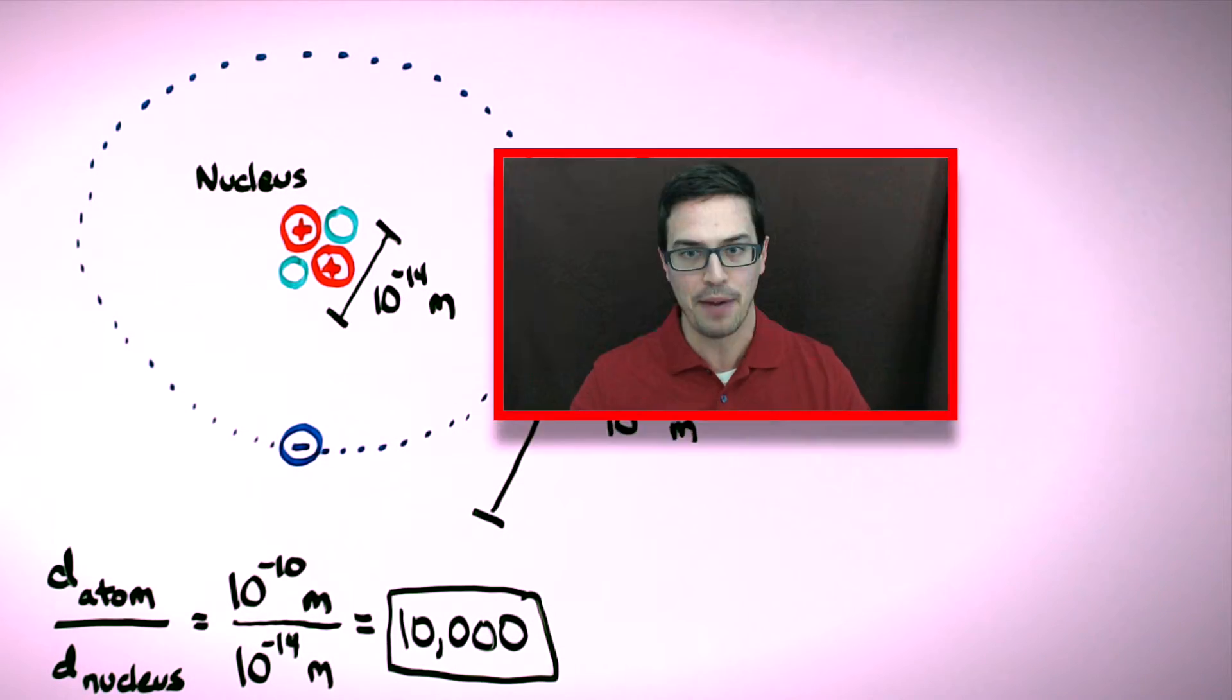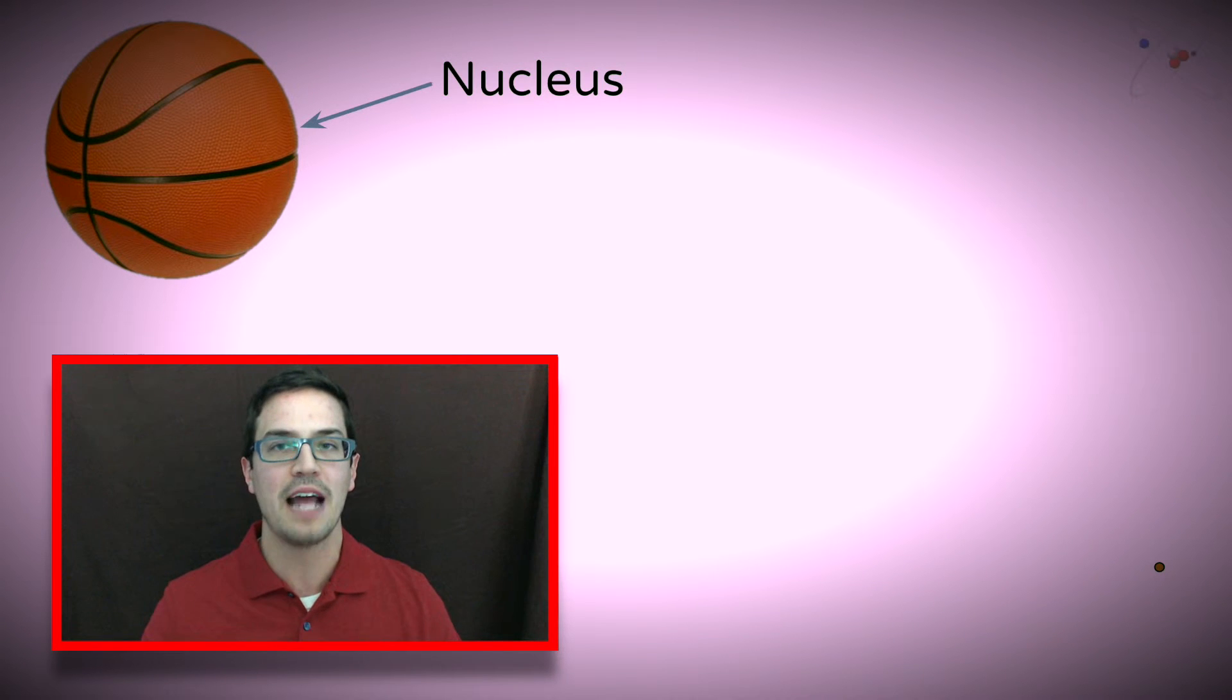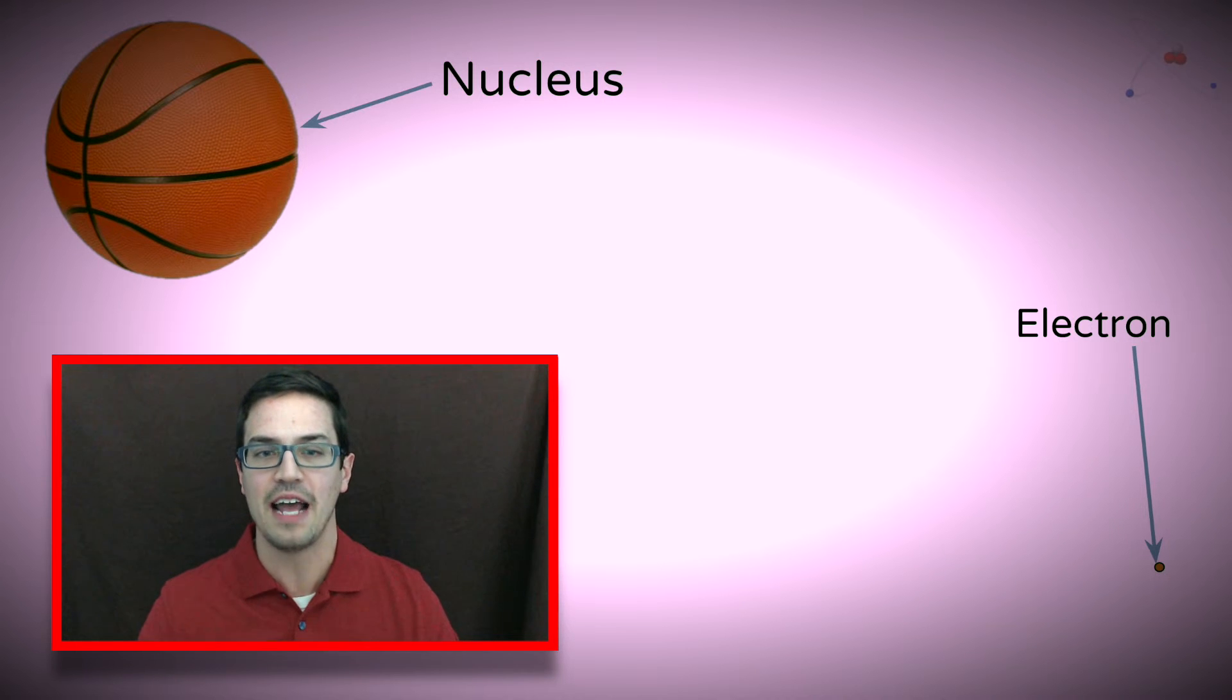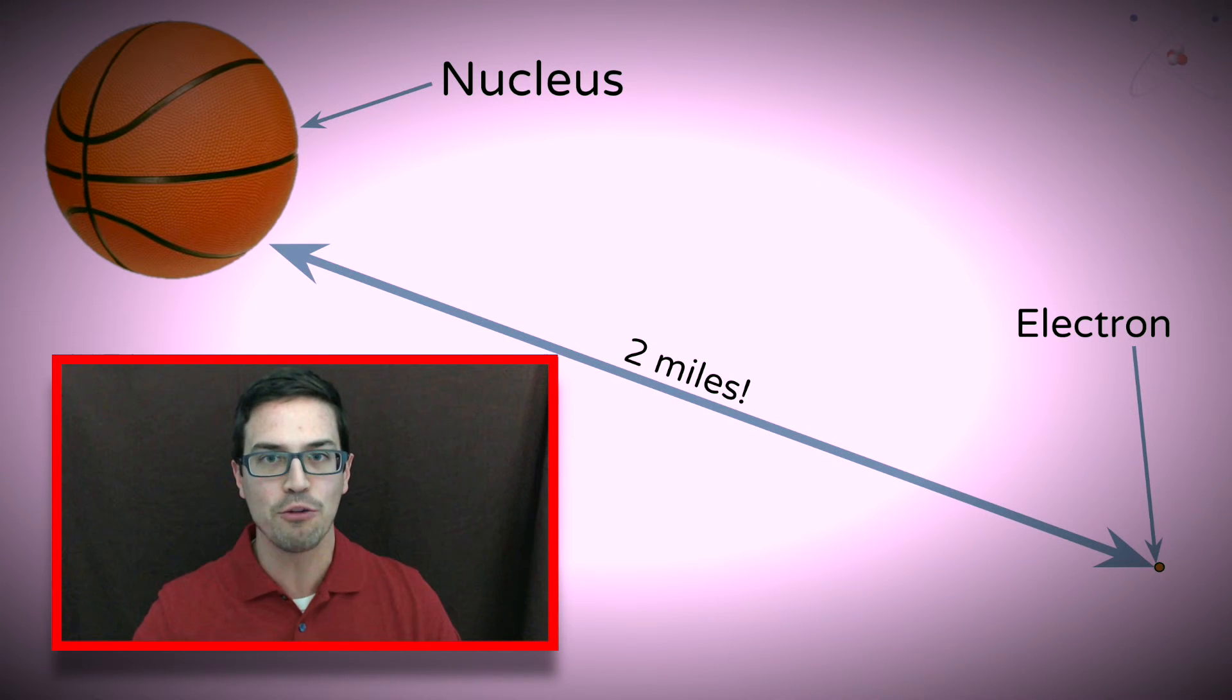To put this in terms that might be easier to understand, let's say that a nucleus is represented by a basketball. The electron would have to be smaller than a grain of sand to be in that same scale. The distance between the nucleus basketball and the grain of sand electron would have to be about 2 miles to accurately show the relative distances and sizes of each of the subatomic particles.